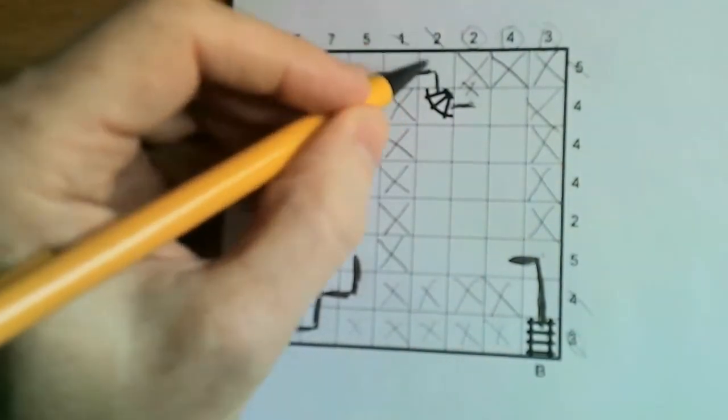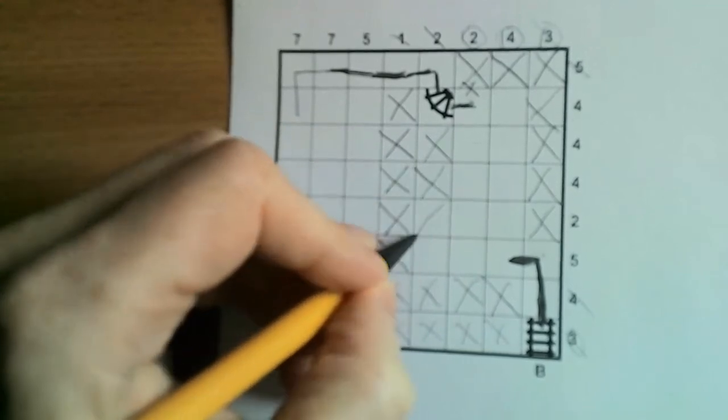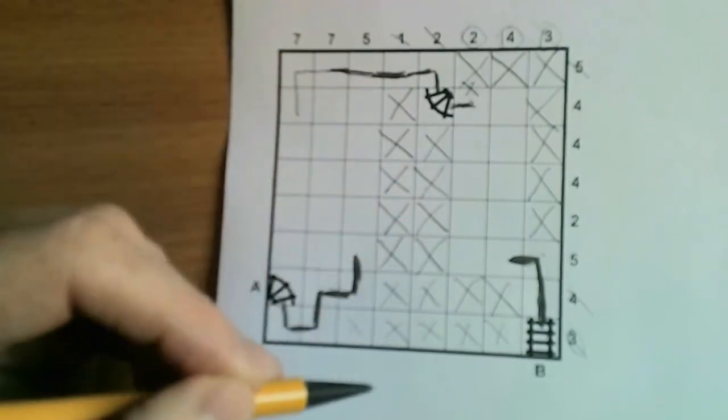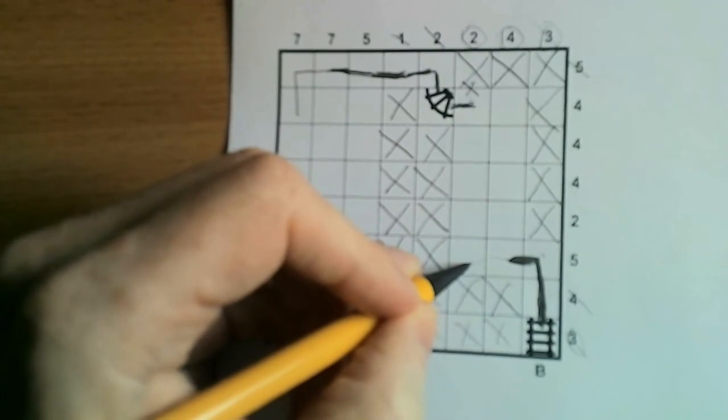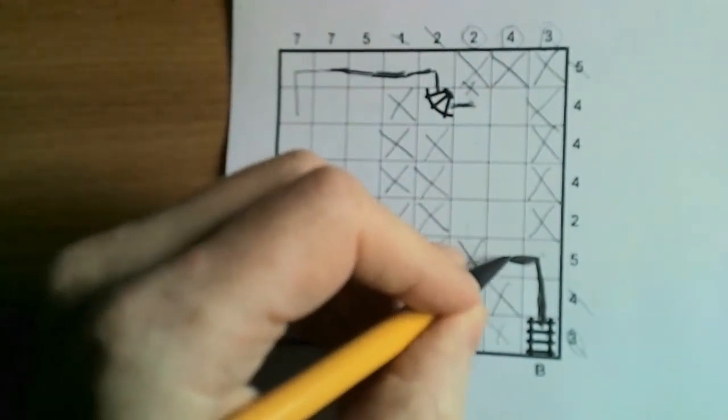Now we've got the two complete here. And now effectively this becomes an edge row. So we can use the same logic that we used at the start of the puzzle. If this were to come across here, it would have to exit there. And that would break the two. So it can't.